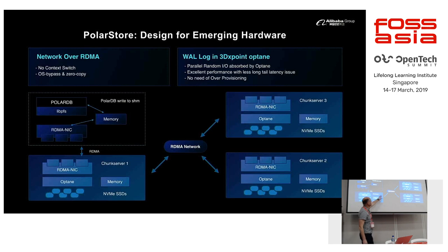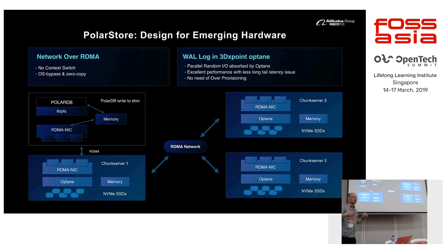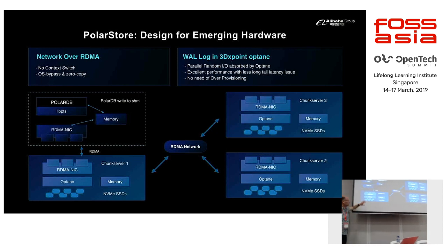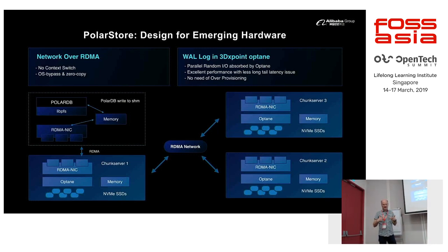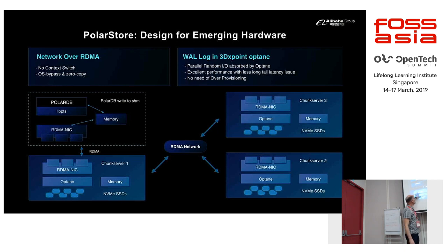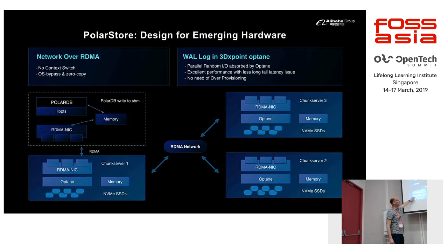To be efficient, the storage uses a special RDMA network, where remote memory looks like local memory to the computer — this needs special hardware. To get both low latency and high throughput, you have both NVMe and SSDs in these storage servers. The NVMe gives you very low latency, while you can get high throughput from the SSDs. There is also some coordination logic within the storage layer.